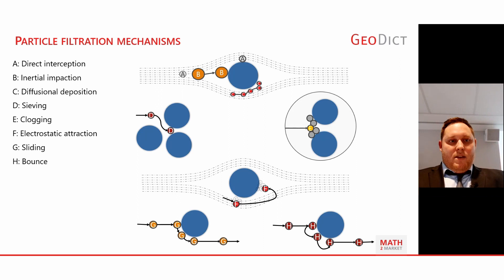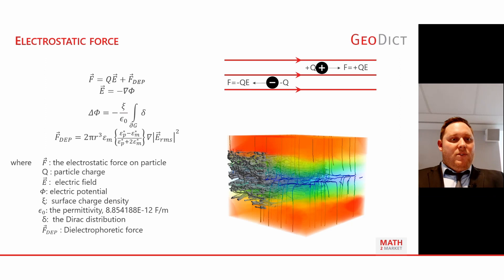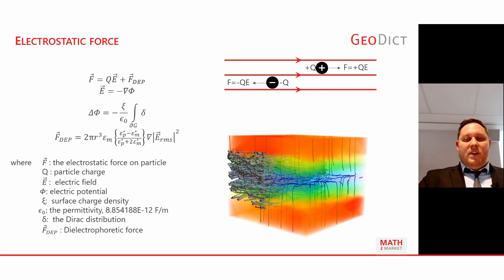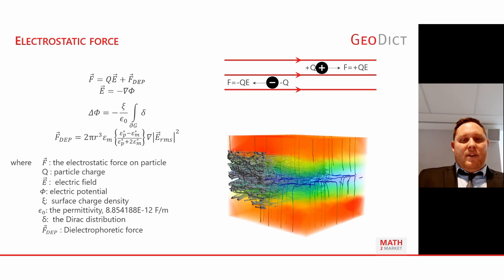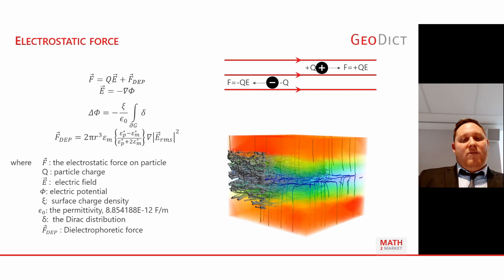One key force today is the electrostatic force calculated in GeoDict. We calculate two forces: the dielectrophoretic force (DEP) and we use the Poisson equation to calculate the electric potential, from which the gradient gives the electric field. The actual force depends on the charge of the particles, the electric field calculated, and the dielectrophoretic force. As shown in the sketch, particles with positive charge move along the electric field, and if negatively charged, they are attracted to the electric field.